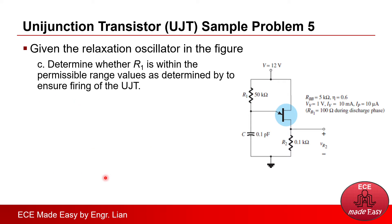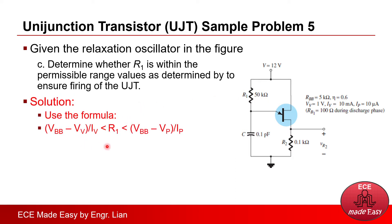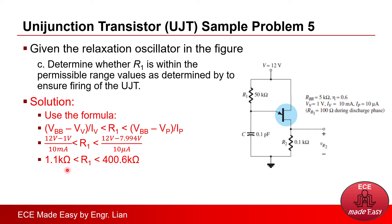Part C: determine whether R1 is within the permissible range to ensure firing of the UJT. The given value for R1 is 50 kilo-ohms. Recalling the formula for the range of R1 from minimum to maximum, and substituting all given values — using Vp of 7.994 volts from Part B for the maximum — we solve the range as 1.1 kilo-ohms to 400.6 kilo-ohms. Since 50 kilo-ohms is within this range, it is acceptable.